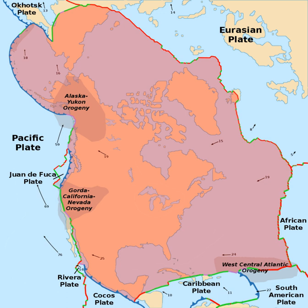The Yellowstone and Anahim hotspots are thought to have first arrived during the Miocene period and are still geologically active, creating earthquakes and volcanoes. The Yellowstone hotspot is most notable for the Yellowstone Caldera and the many calderas that lie in the Snake River Plain, while the Anahim hotspot is most notable for the Anahim Volcanic Belt, currently found in the Nazko Cone area.